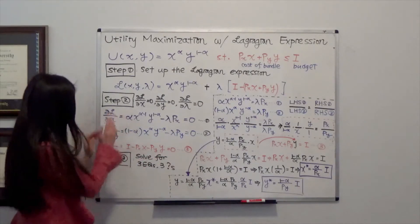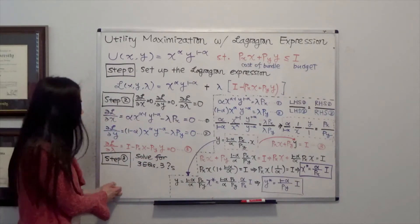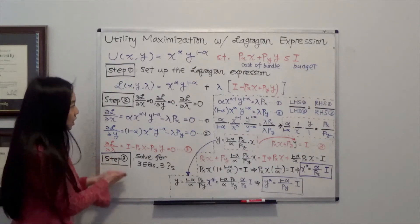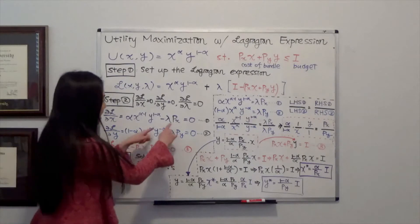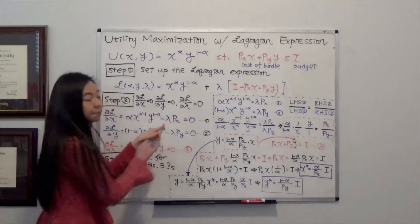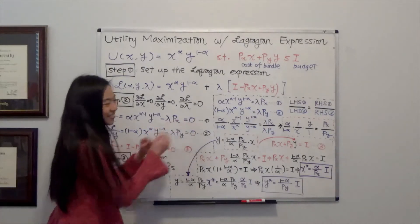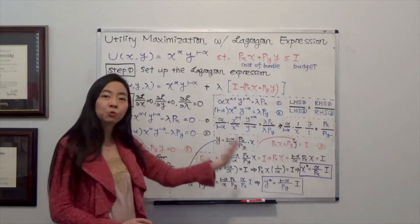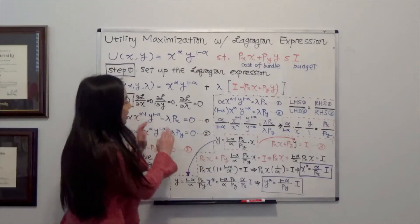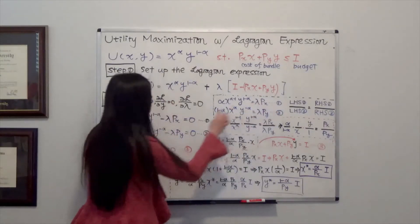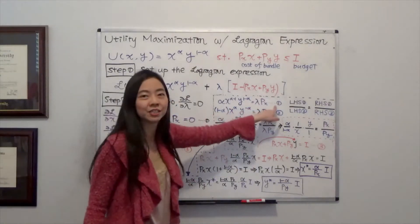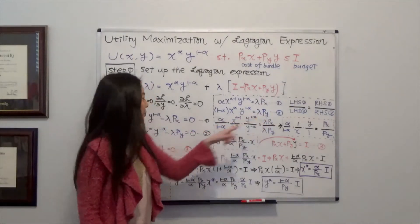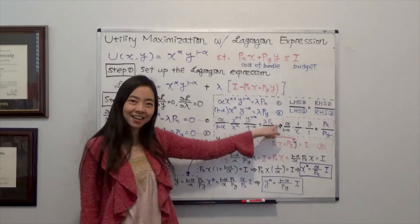Moving on to step 3 — solving for 3 equations in 3 unknowns. In equation 1, I'm moving lambda·p_x to the right-hand side, and in equation 2, I'm moving lambda·p_y to the right-hand side as well. I'll rewrite my equations using a color code: equation 1 is purple and equation 2 is blue.